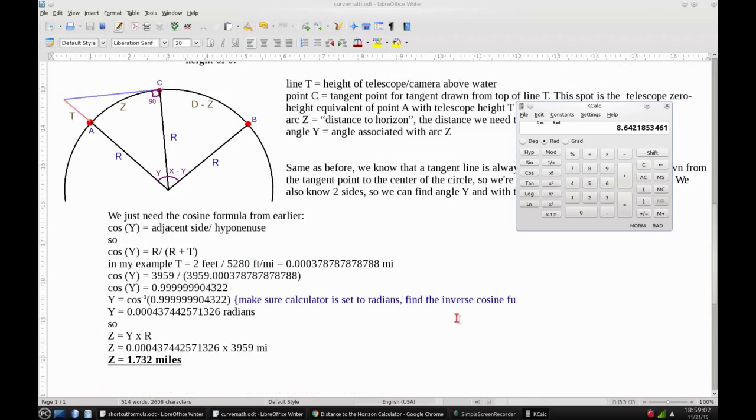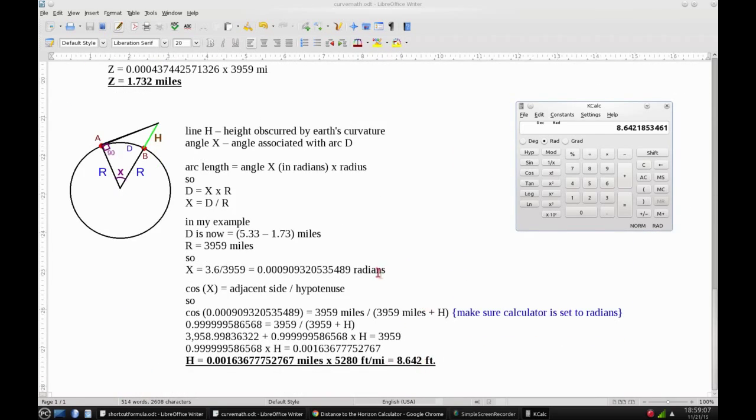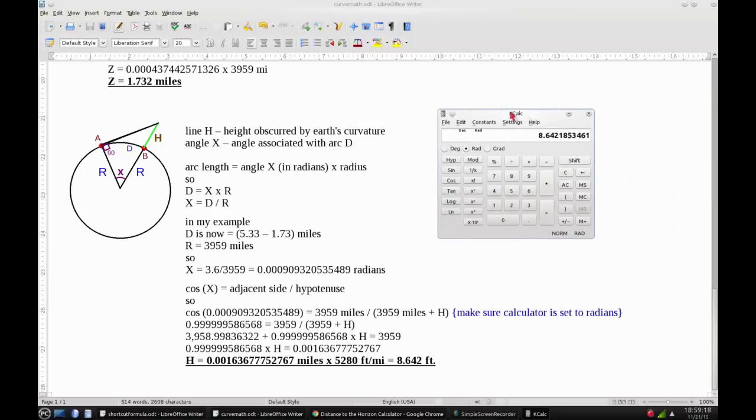So you can see the huge difference here between the 18.94 feet and 8.642 feet. And I only had a telescope height of 2 feet. So when you're dealing with small distances, just a few feet off the ground makes a big difference in this calculation. So there you go. Good luck to anyone who's going to try this for themselves.